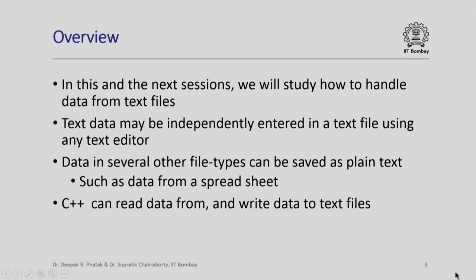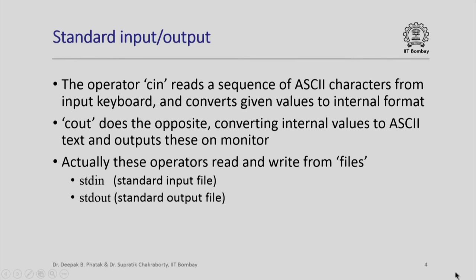C++ programs can read data from and write data to text files. We note that the cin operator that we use can read a sequence of ASCII characters and can convert these characters into appropriate values in internal format. Similarly, cout converts internal values into ASCII characters text and outputs these on the monitor. Actually, these operators read and write from files.